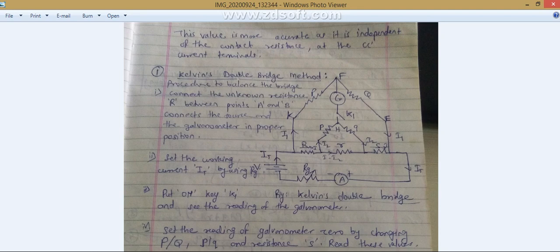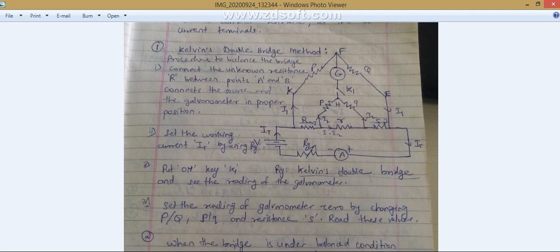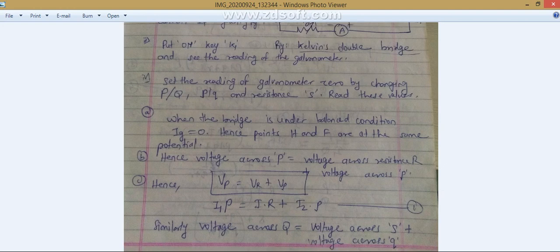Then you have to vary this standard variable resistance S to get the null deflection, so F and H will become equipotential points. So you can write the voltage drop across capital P is equal to the voltage drop across capital R plus small p. This is equation number one. The voltage drop across capital P is equal to voltage drop across capital R and small p. V equals IR concept is used, so I1 into P, capital R is a resistance, and small p is also resistance. Here capital R is the unknown resistance, and I1 and I are the currents.